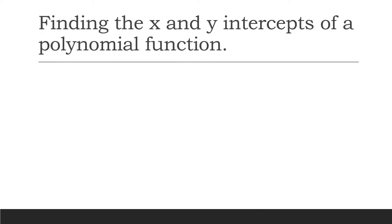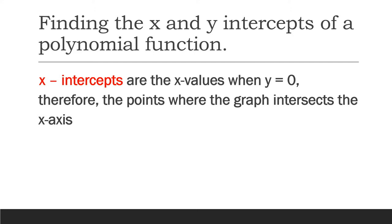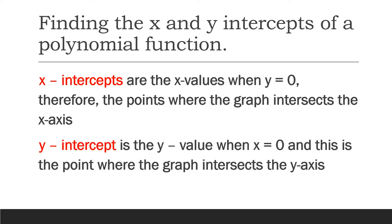We will be finding the x and y intercepts of a polynomial function. But before that, let us first define what x intercepts and y intercepts are. When we speak of x intercepts, these are the x values when y or f(x) is equal to 0 — the points where the graph intersects the x-axis. While the y intercept is the y value when x is equal to 0, which is where the graph intersects the y-axis.